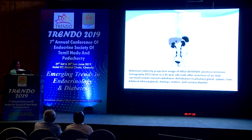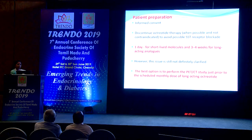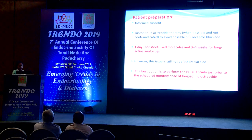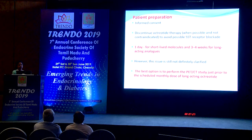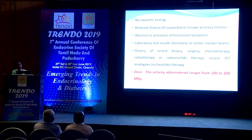A normal DOTA-NOC image shows uptake in the pituitary, adrenal glands, liver, spleen, and excretory system. For patient preparation: explain the procedure and obtain informed consent; discontinue octreotide therapy when possible — ideally one day for short-acting and three to four weeks for long-acting analogues, though the best option is to perform the scan just prior to the scheduled monthly long-acting dose. No fasting is required. The administered activity is typically four to six millicuries.